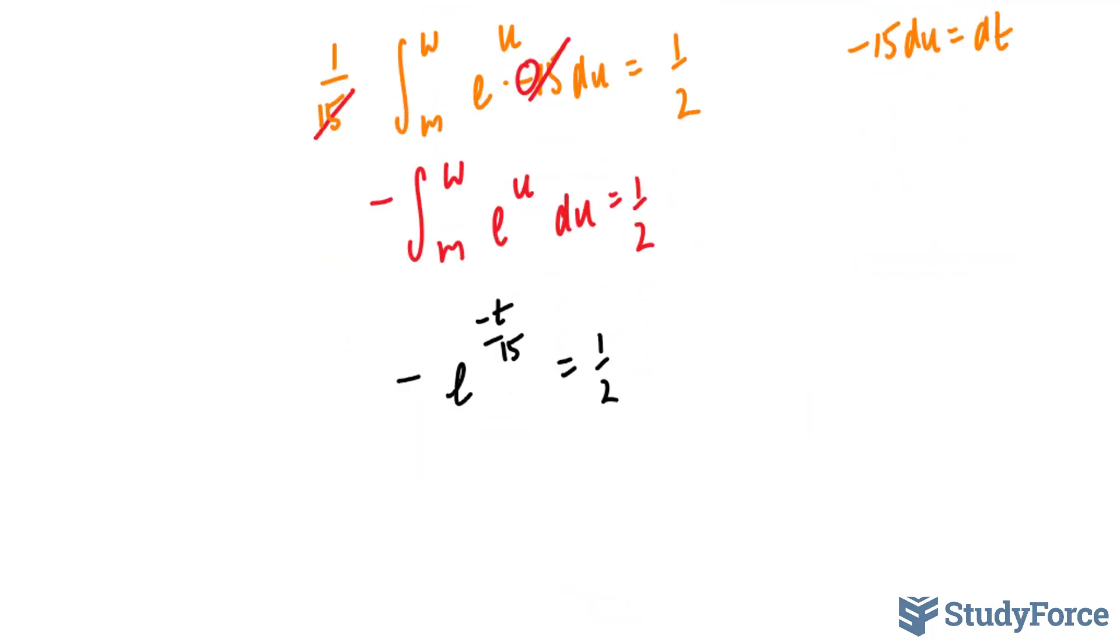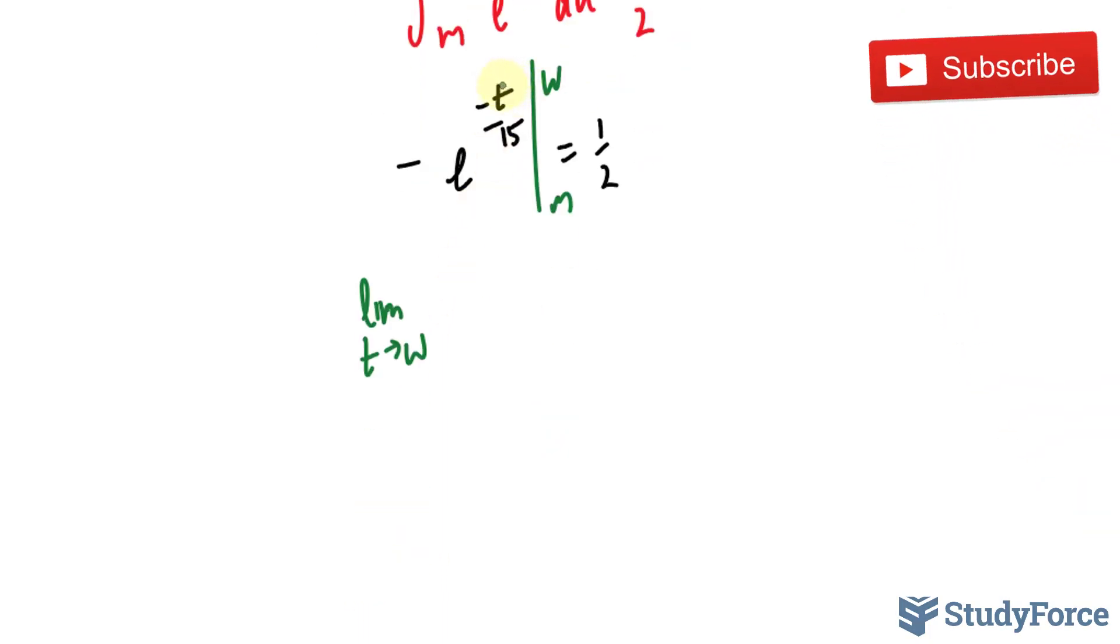Of course, now I have to evaluate this at w and m. I need to take the limit for the upper bound w. So I'll take the limit as t approaches w. If I substitute a very large number into t, I end up with a very large negative number. E to the power of a very large negative number gives us zero. Negative times zero is zero.